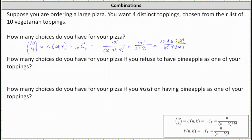We also have 4 times 2 in the denominator, which is 8, and we have an 8 in the numerator — so 8 divided by 8 simplifies to 1. Also, 3 and 9 share a common factor of 3: there is one 3 in 3, and three 3s in 9. We are left with 10 times 3 times 7, which equals 210 choices.